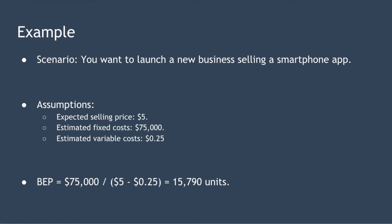Let's take a look at an example. Suppose you want to launch a new business selling a smartphone app. We're assuming a selling price of $5, estimated fixed costs of $75,000 — enough to cover your salary and pay for a small office — and variable costs of $0.25 per sale, representing transaction fees. Using the formula: 75,000 divided by (5 minus 0.25), that means you'll need to sell approximately 15,790 units of your app to break even.